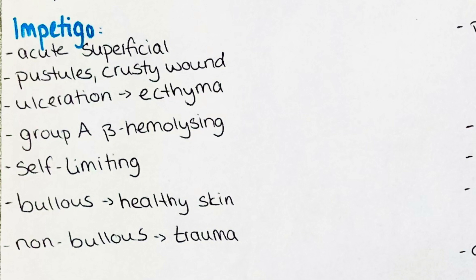Impetigo is the first disease we will talk about in more detail. It is a common acute superficial infection. The skin presents with small pus-filled blisters called pustules and also with crusty wounds in a yellowish-orange color. If the infection proceeds and the skin forms an ulceration, we call this ulcerated impetigo ectyma. It is most often caused by group A beta-hemolytic Streptococcus pyogenes and also by Staphylococcus aureus.